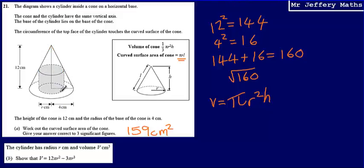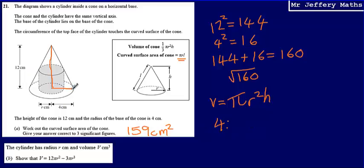What we also know is that the radius of this cone compared to the height of this cone — if we were to put those lengths in a ratio — we could say that the ratio of the radius to the height would be 4 to 12.